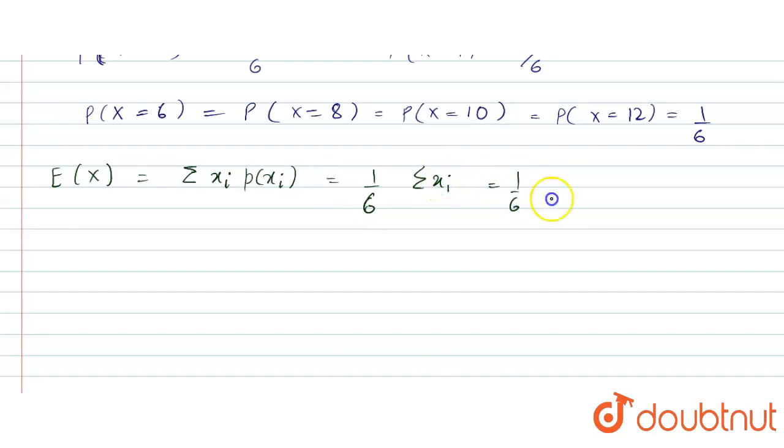which is 1 by 6 times 2 plus 4 plus 6 plus 8 plus 10 plus 12 which is coming out as 7. So, the expectation of x is 7. So, this is its mean.